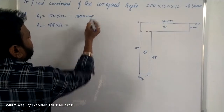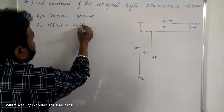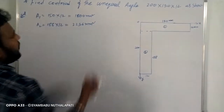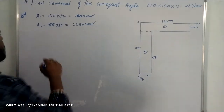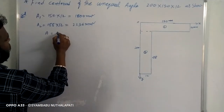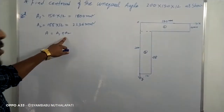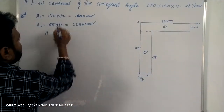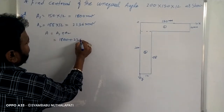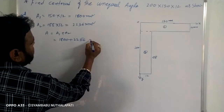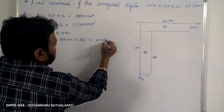The second component A2 is 2256. So A total equals A1 plus A2, which is 1800 plus 2256, giving a total area of 4056.